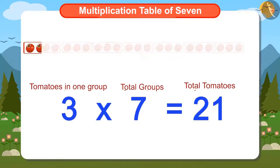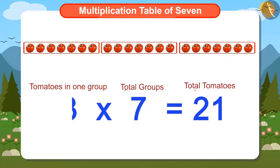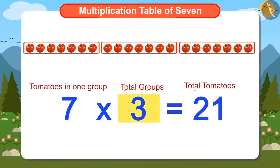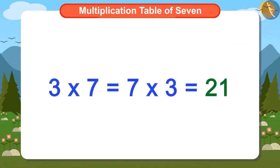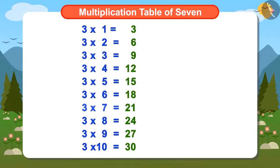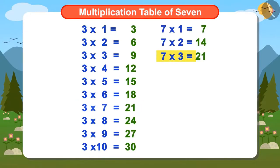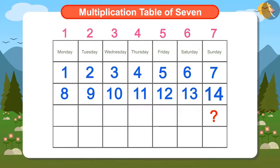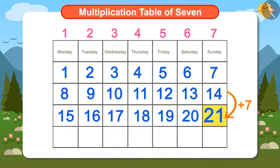If we put these 21 tomatoes in 3 equal groups, then there will be 7 tomatoes in each group. The number of tomatoes are still 21, but there are 7 tomatoes in 1 group and the total number of groups are 3. This means that whether 3 is multiplied by 7 or 7 is multiplied by 3, the answer will be 21. So the date on the following Sunday after the 14th will be 21st.